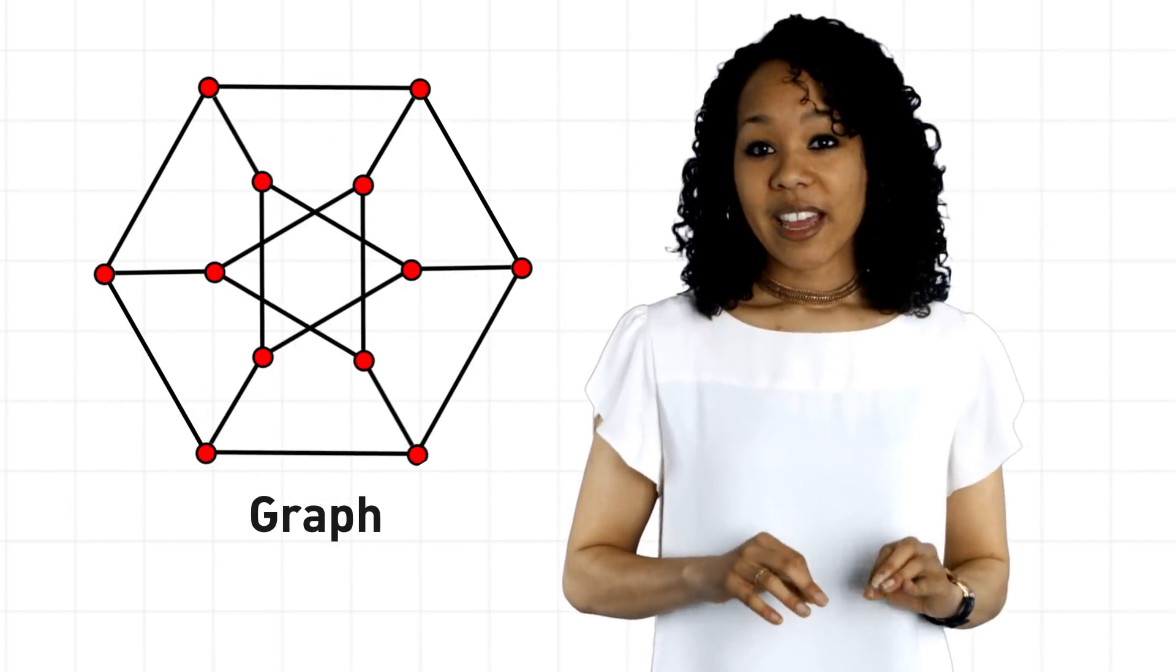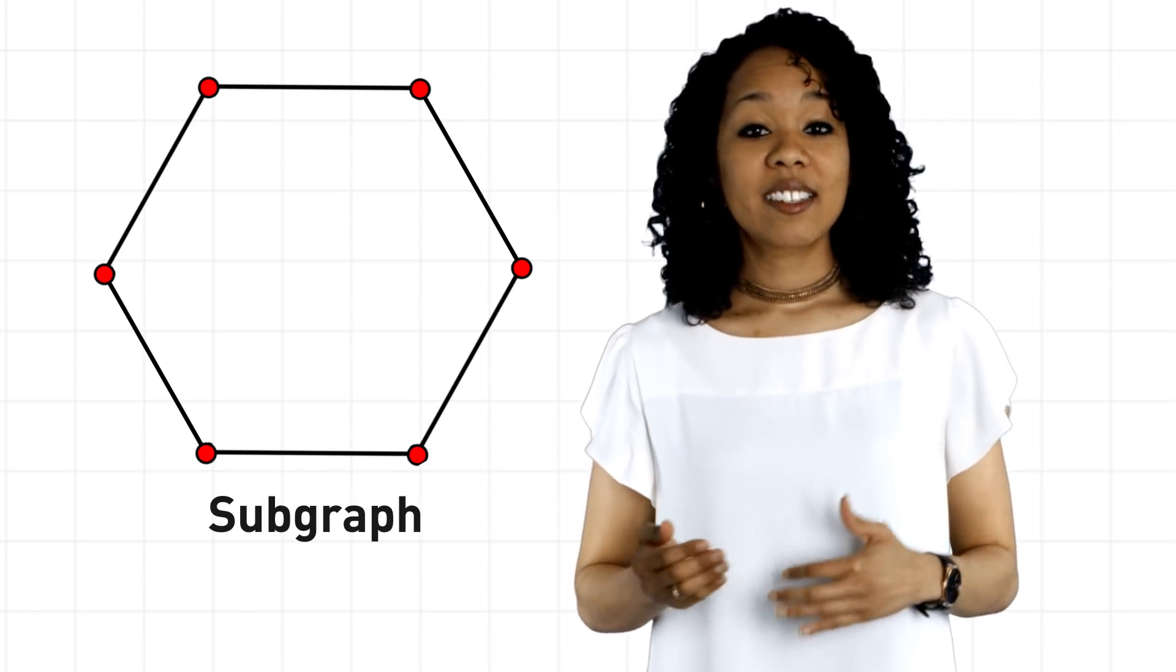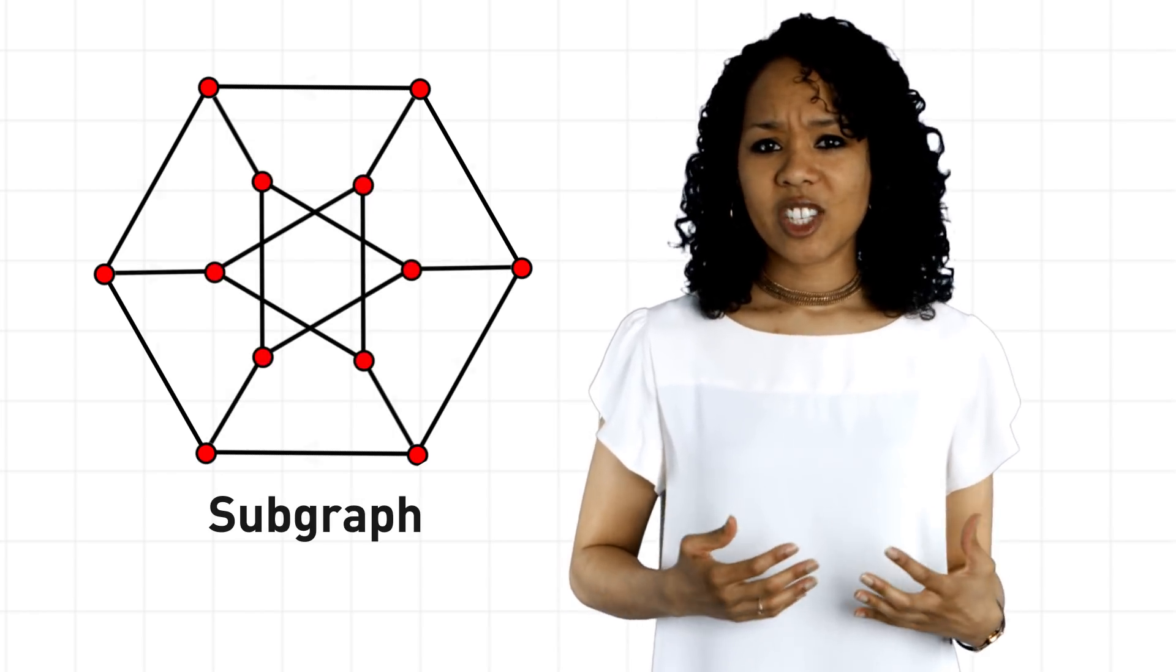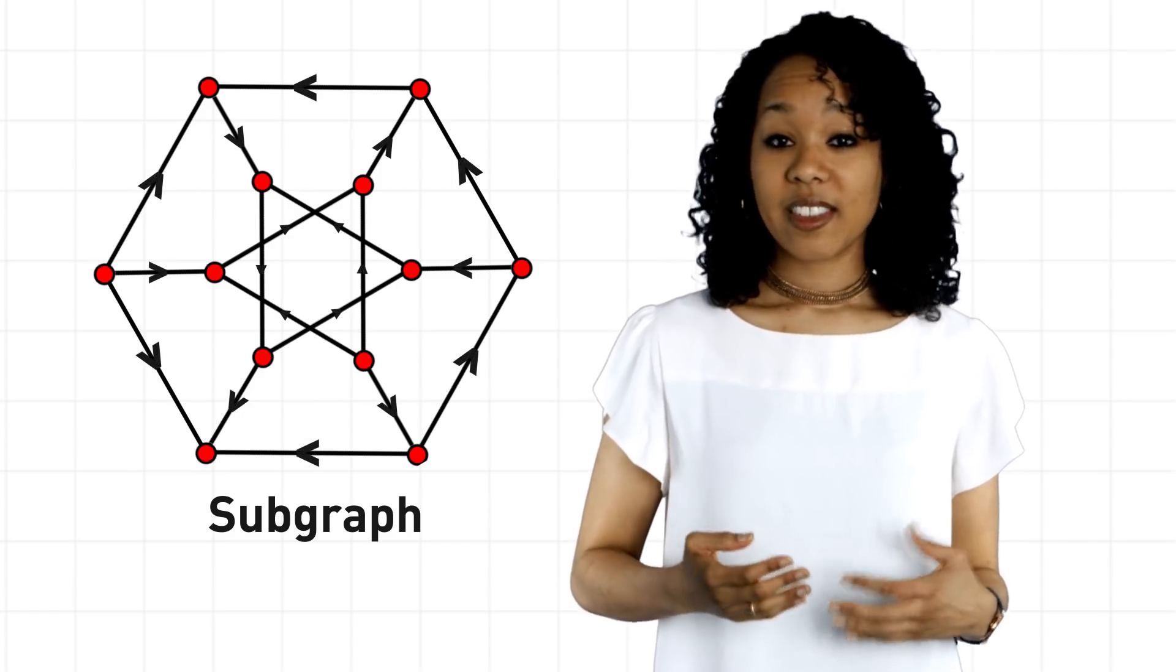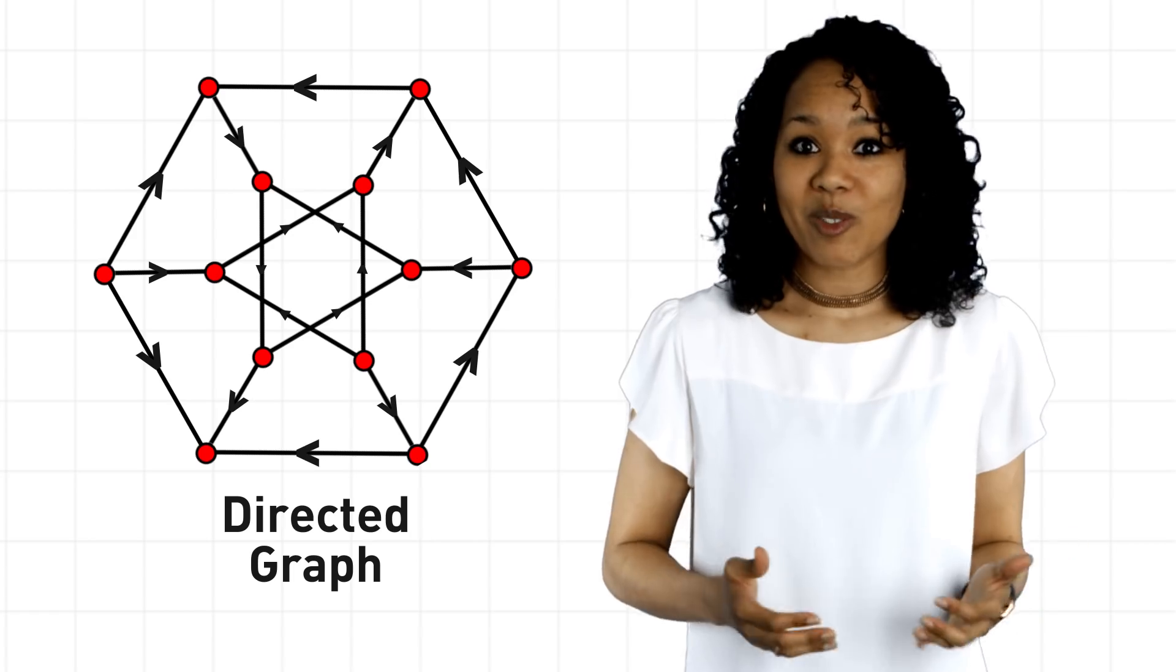If you start with a graph and then delete vertices or edges, the result is called a subgraph of the original graph. And if you decorate your edges with arrows like this, then the graph is called a directed graph. And this is all we need to know to solve the puzzle.